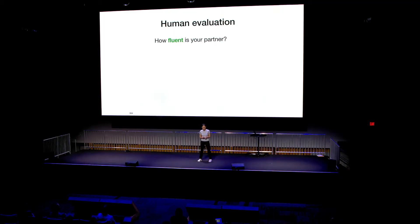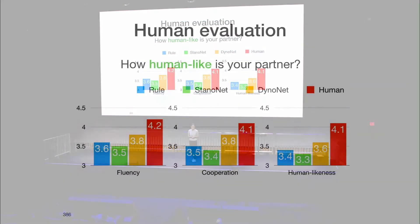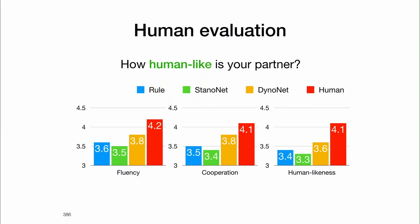We also did human evaluation. We deployed the bot and had humans chat with it for A-B testing. We evaluated the bot on how fluent their partner is, how cooperative their partner is, and how human-like their partner is. We compared our system with a rule-based bot and a standard net, which is an ablation of our model without message passing — the graph representation is fixed from the beginning. The red bar is human performance. In all aspects, we're performing better than the baselines.